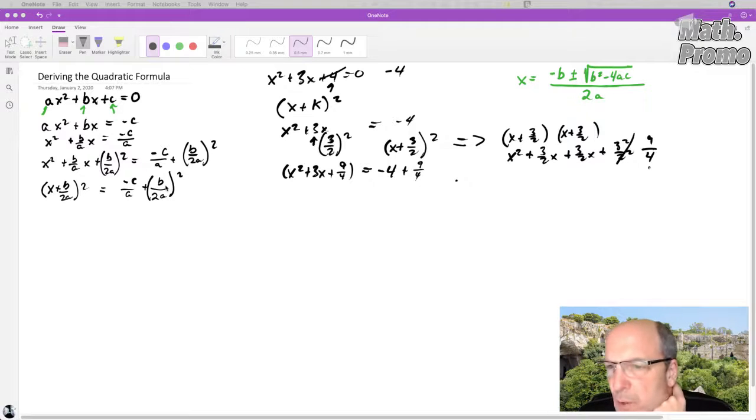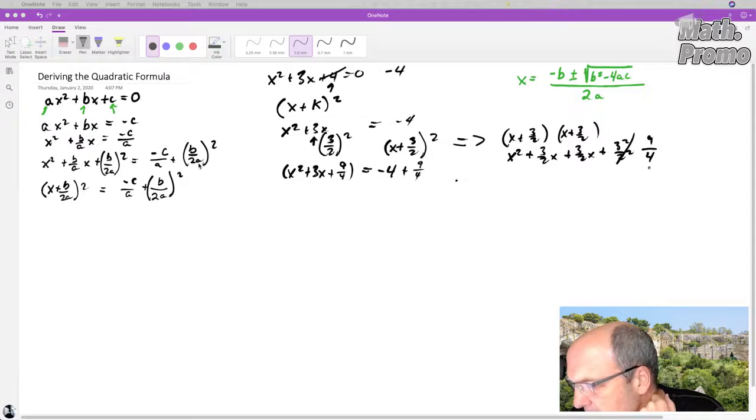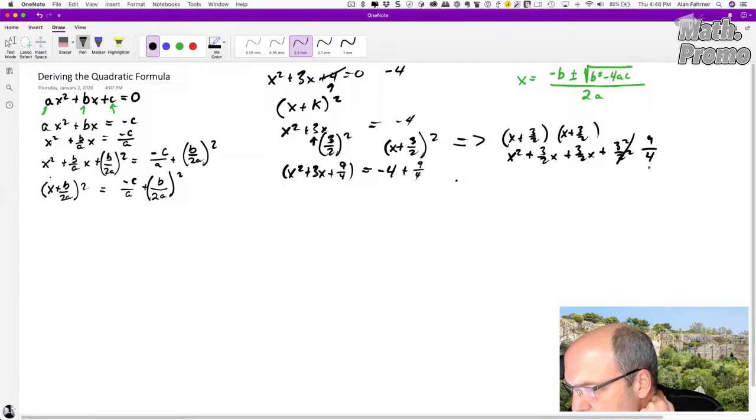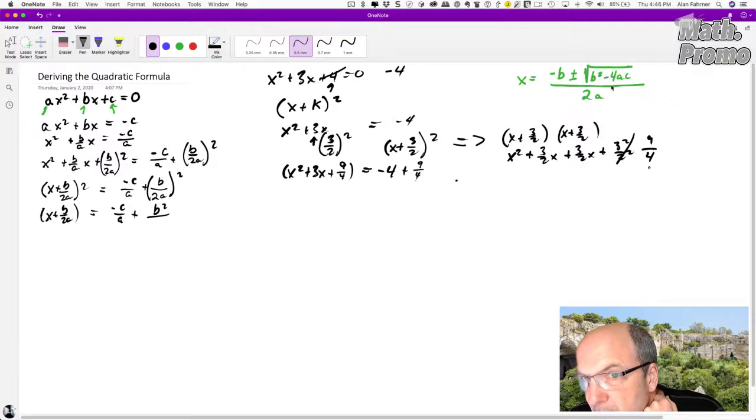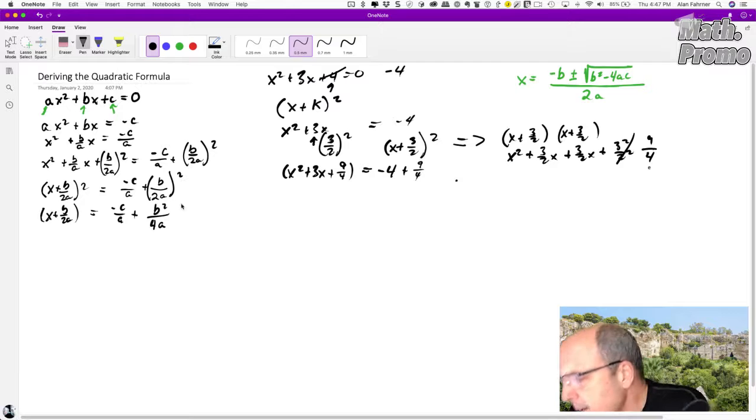This right side's not that pretty. We want to get a common denominator. Let's go ahead and make it so that the left side is multiplied out. X squared plus 2 times x times b over 2a plus b squared over 4A squared. Makes sense? Because we just multiplied this out.